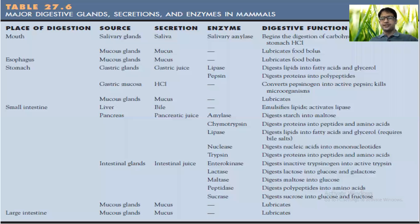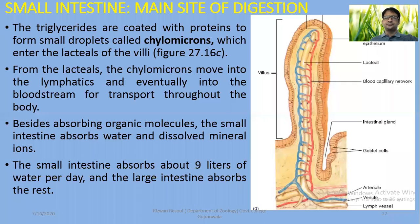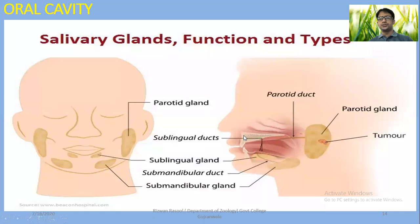This concludes the discussion of different associated glands — liver, gallbladder — and a summary of the digestive glands including large intestine, small intestine, stomach, and oral cavity. That was all about the human digestive system, covered across three lectures available as videos on the YouTube channel. If you have any questions, please discuss them.